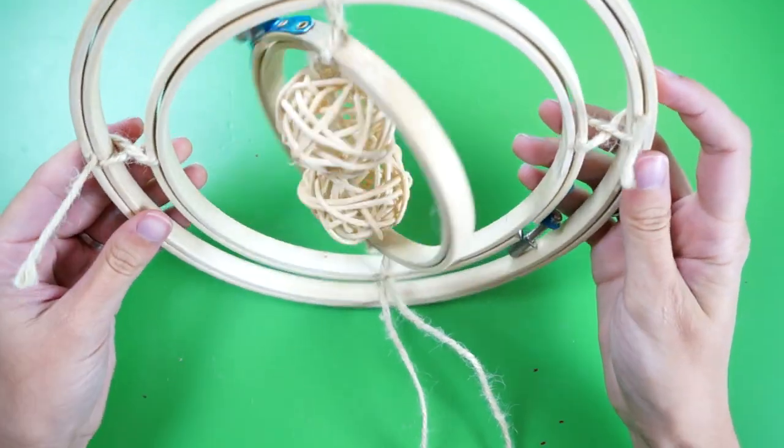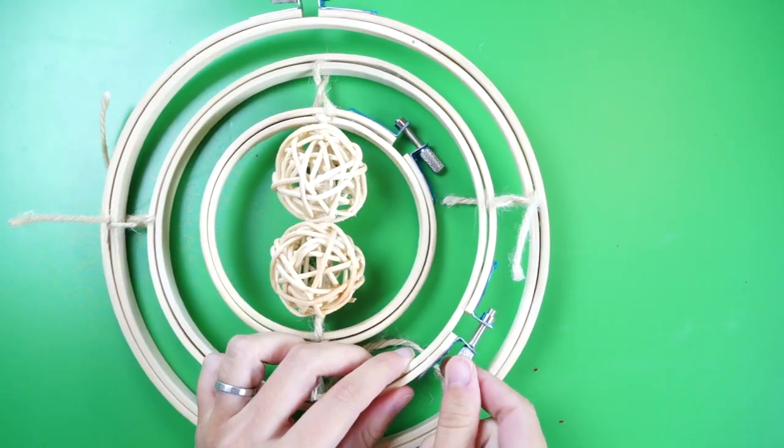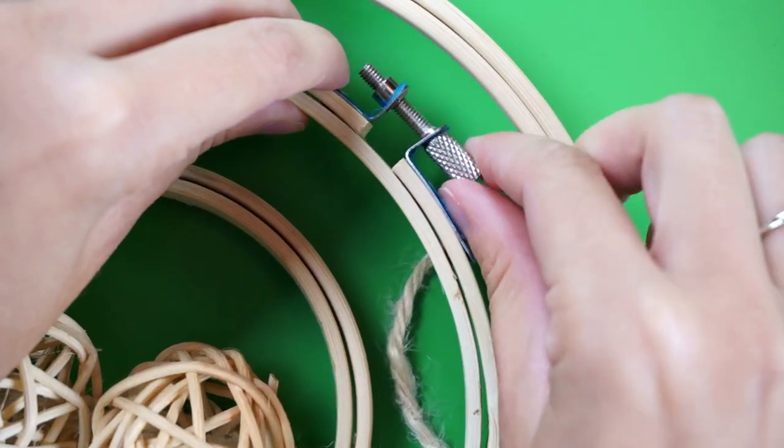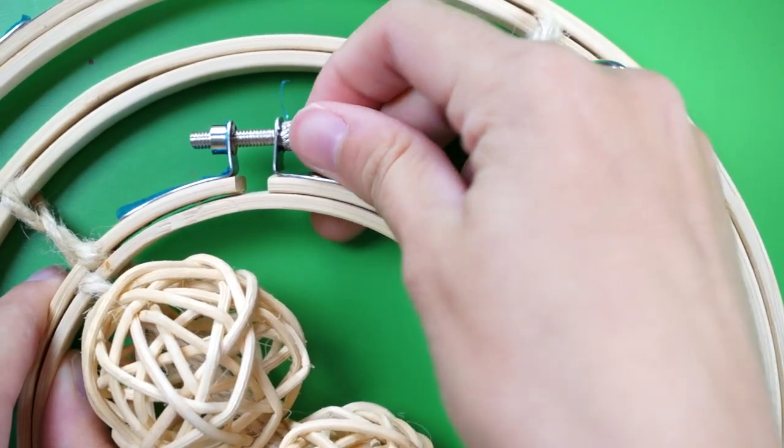Next I took some time to adjust and tighten the attachment points just to make sure that it would hang correctly. When you're happy with it, tighten all of the hoops for good. That will hold all of the twine in place and keep the attachment points nice and strong.